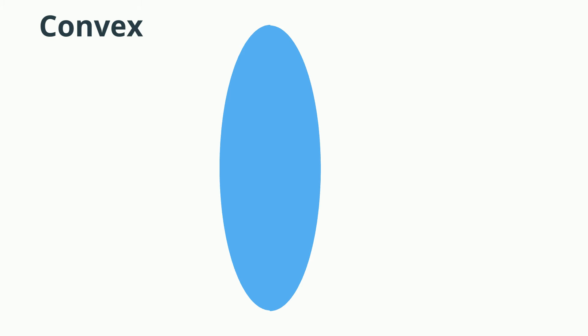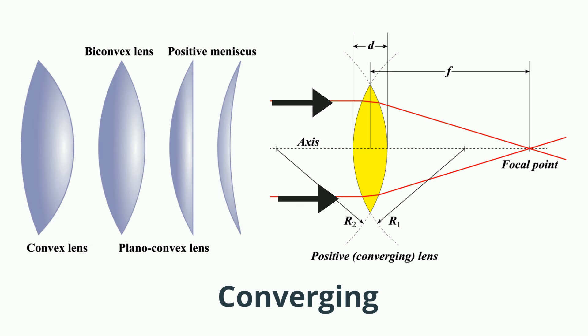A convex lens is a lens that is thicker at the center compared to the edges. Convex lenses are also called converging lenses because as the light passes through the lens, the rays come together at a focal point.